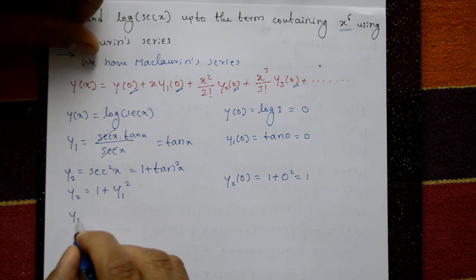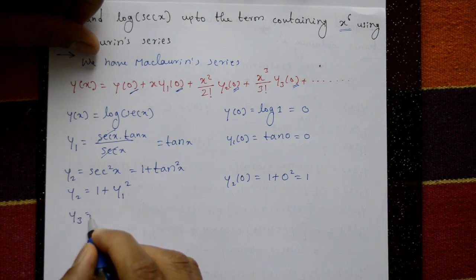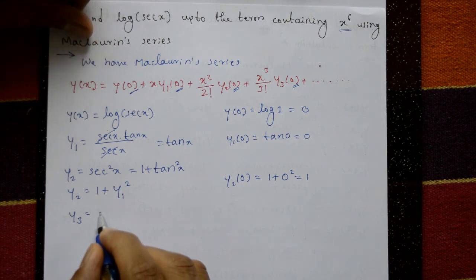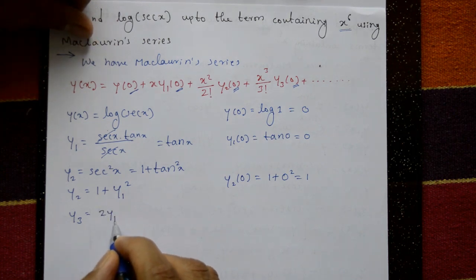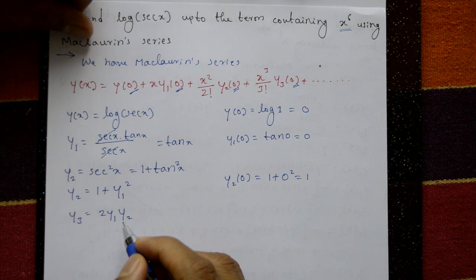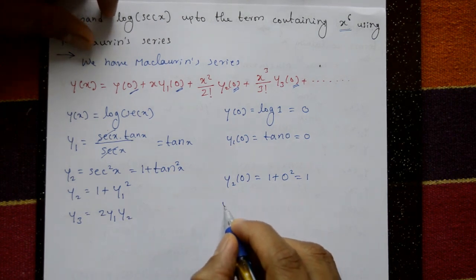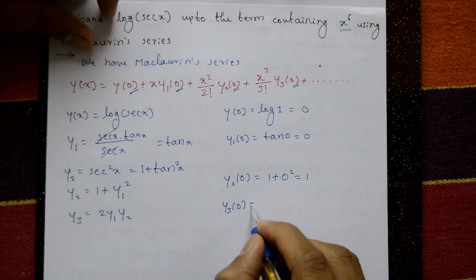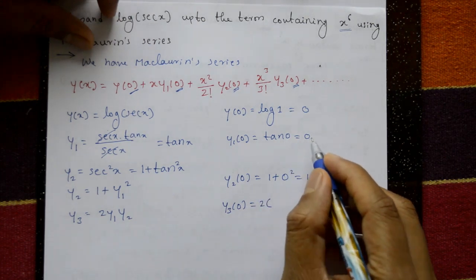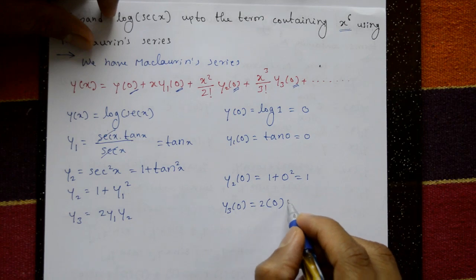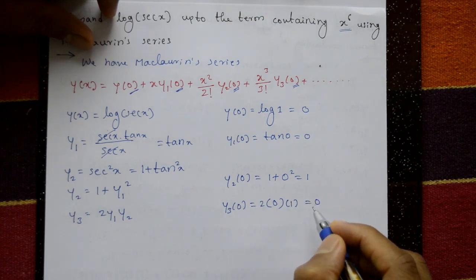Differentiate again for y3. The derivative of the constant term is 0. Differentiating y1² gives 2·y1·y2. Put x = 0: 2 × y1(0) × y2(0) = 2 × 0 × 1 = 0. So y3(0) = 0.